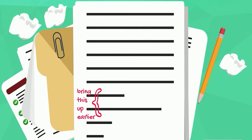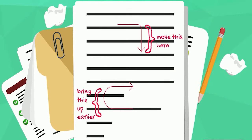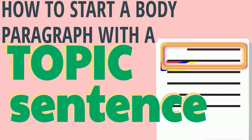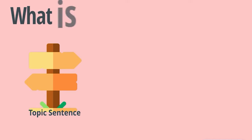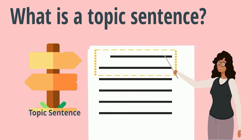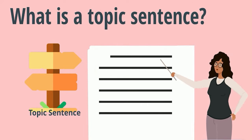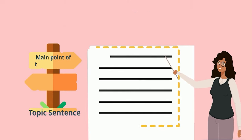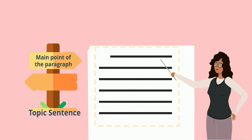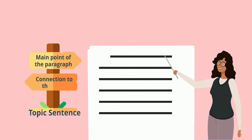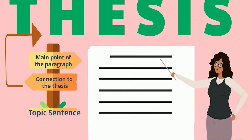If you ever have trouble organizing your essay or making your essay flow, working on your topic sentences may be the solution you need. A topic sentence is the first sentence of a body paragraph and it has two jobs: one is to tell the reader the main point of a paragraph, and the other is to tell the reader how that paragraph connects to the thesis statement.